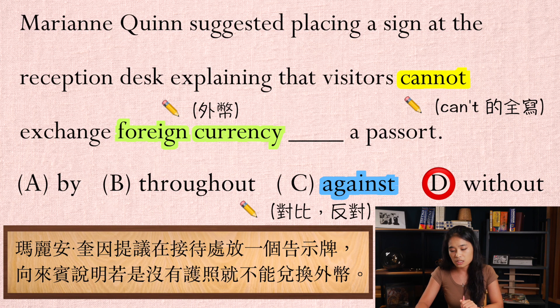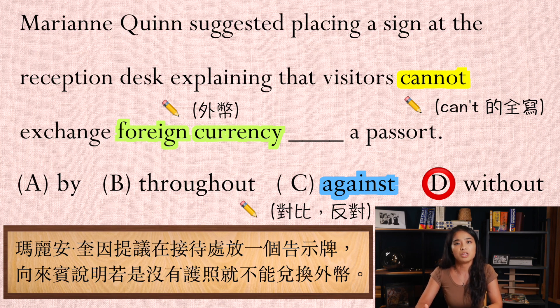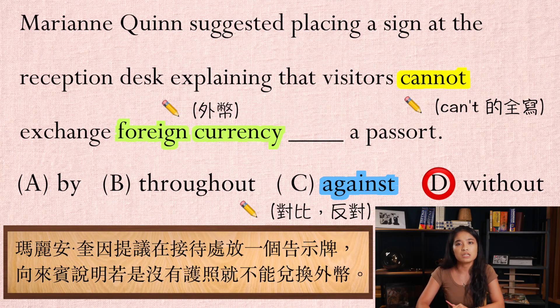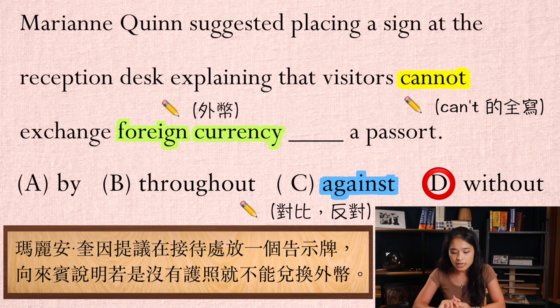那我們來說說選項C——against,它其實是對比或者是反對的意思。通常前面的動詞會搭配fight against、go against,就是你要去跟別人對抗,或者是要反對什麼事情的時候搭配的介系詞。